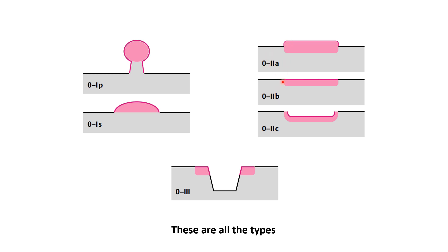Flat means completely flat. Slightly depressed means depressed below the surface, with a depth measure of less than 1.2 mm — half the open cup of the biopsy forceps. Excavated lesions, type 3, are truly deep lesions, more than 1.2 mm.